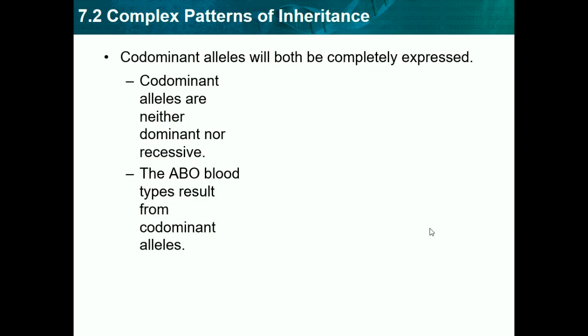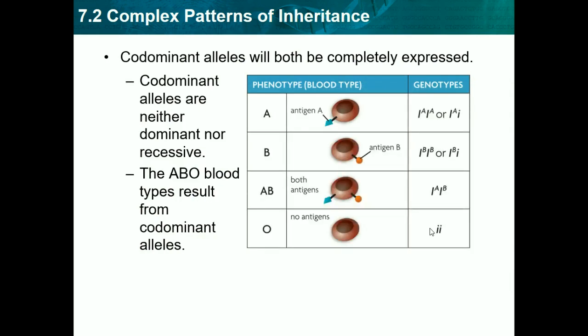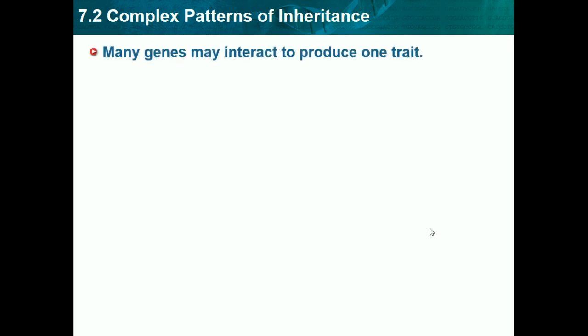The ABO blood types result from codominant alleles. There are three main blood types — A, B, and O — and they result from codominance, so neither one is fully dominant or recessive. A simpler example: if a plain black cat and a plain white cat have a kitten that is black and white with spots, neither color is dominant nor recessive — that's codominance, where both are completely expressed. Many genes also have more than two alleles, which further affects codominance.